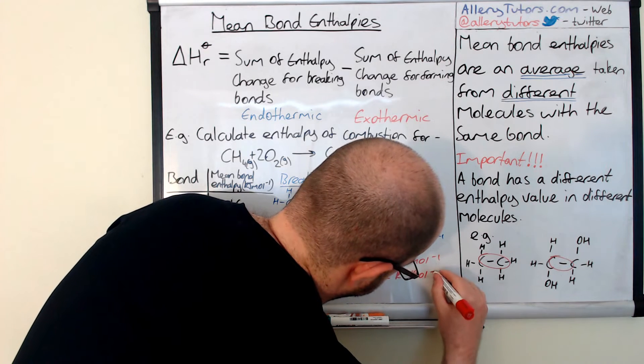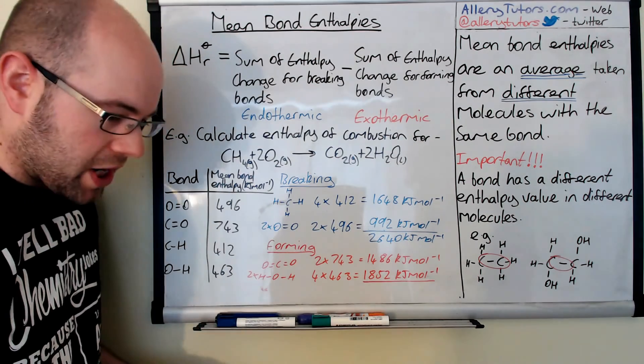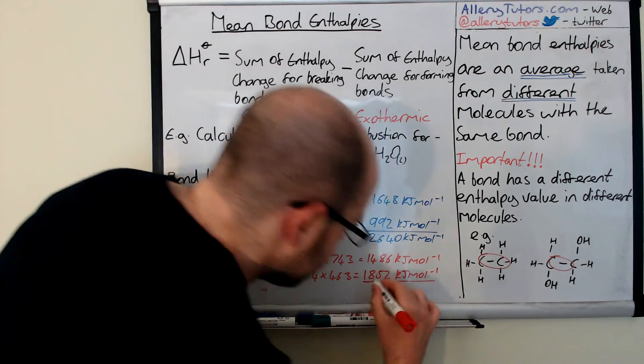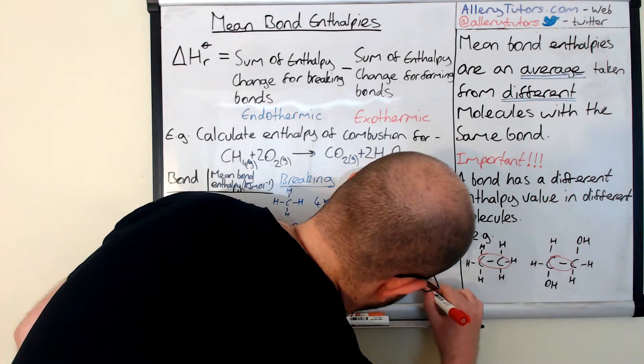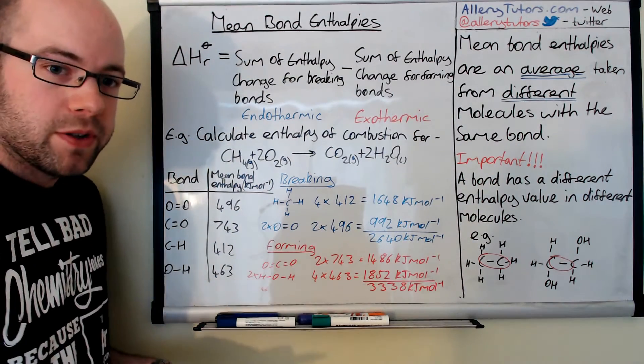If we add all them numbers up because it's the sum of the enthalpy change, then we should get a value of 3338 kilojoules per mole. That is the amount of energy given out when we form the bonds to make products.